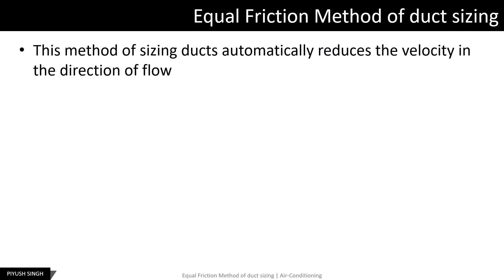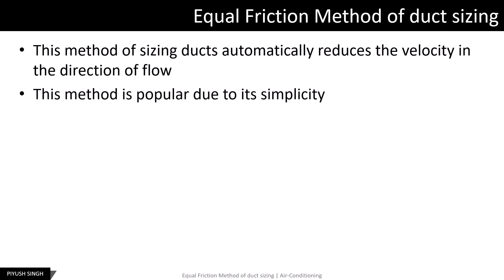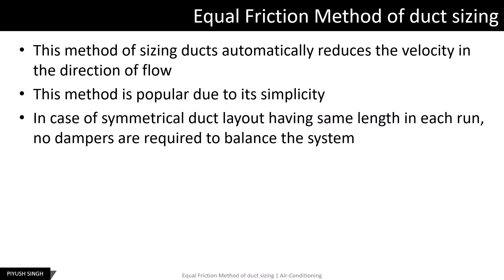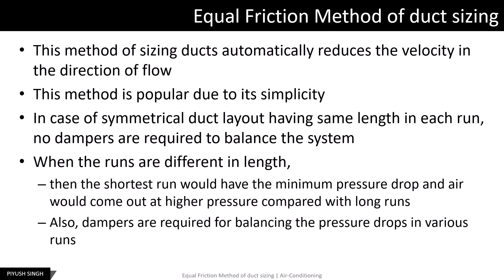In this method of duct sizing, the velocity reduces in the direction of the flow. This method is very popular due to its simplicity. In case of a symmetrical duct layout having the same length in each run, no dampers are required to balance the system. However, when we have asymmetrical duct systems, the shortest run would have the minimum pressure drop and air would come out at higher pressure compared with longer runs.